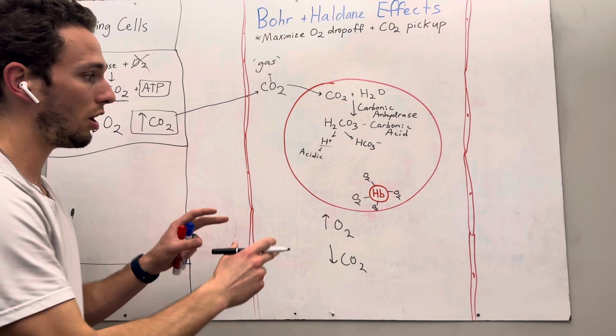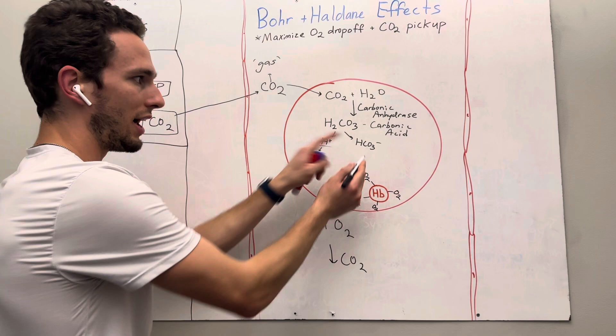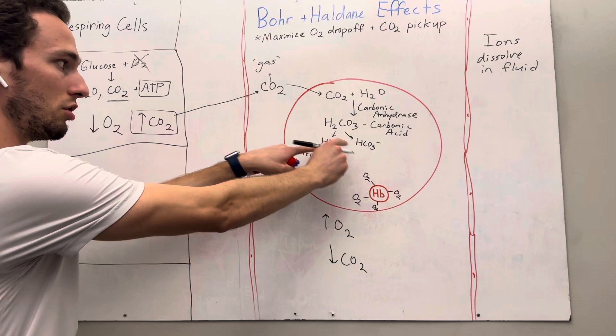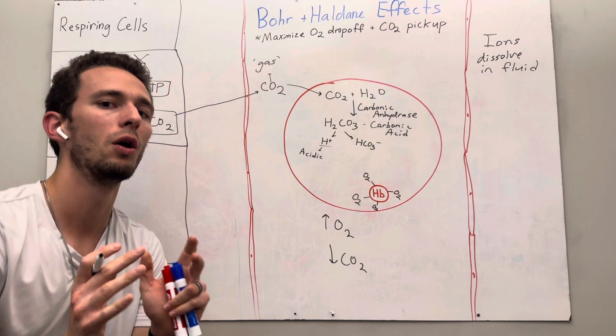So why did we do this? I said because we're taking a gas and we're converting it into ions. And if you remember anything from my previous videos, ions like to dissolve in fluid. So we are in fluid blood, so we are converting a gas carbon dioxide into ions so that they can flow in the bloodstream well. That's the goal, right? Now, we have a problem.